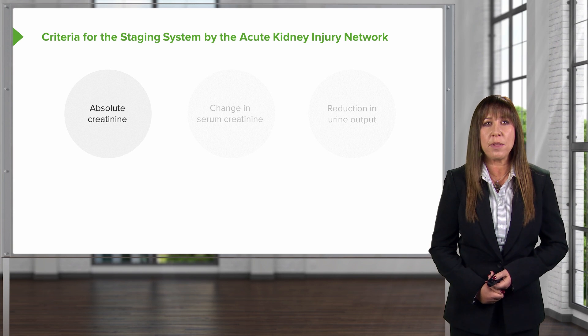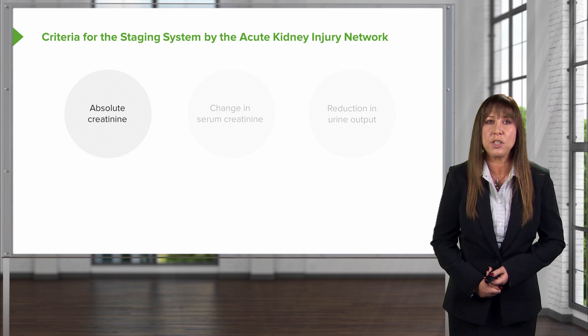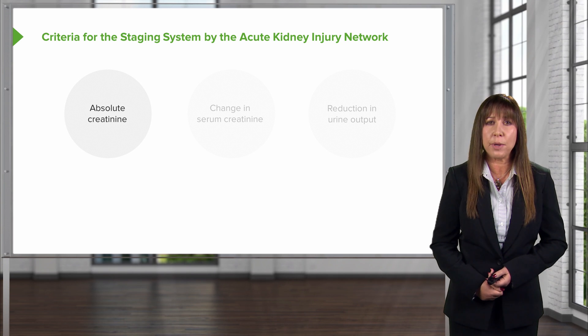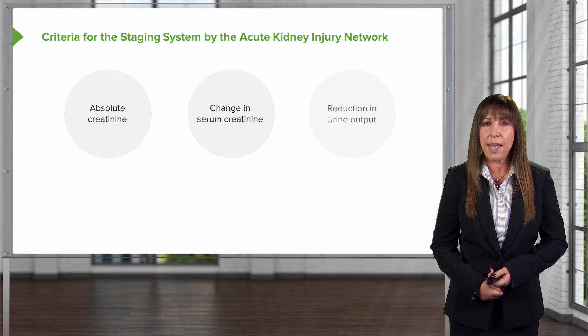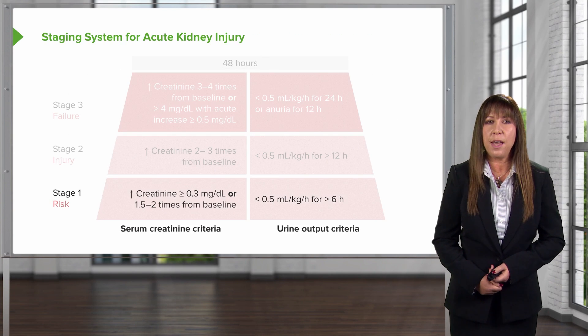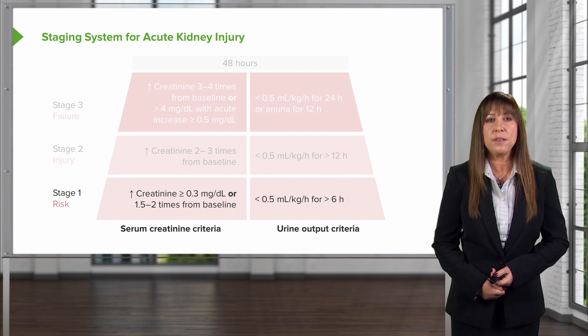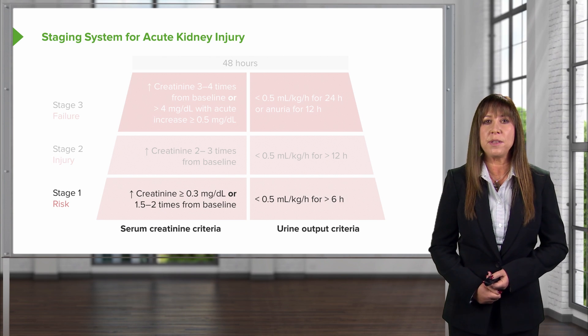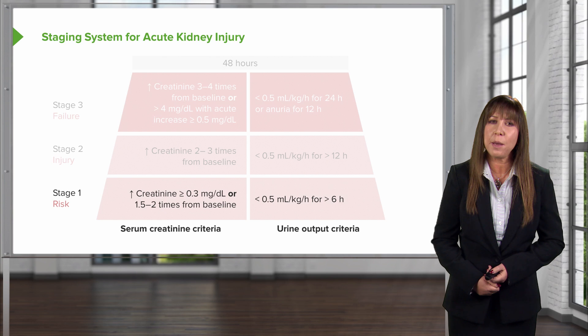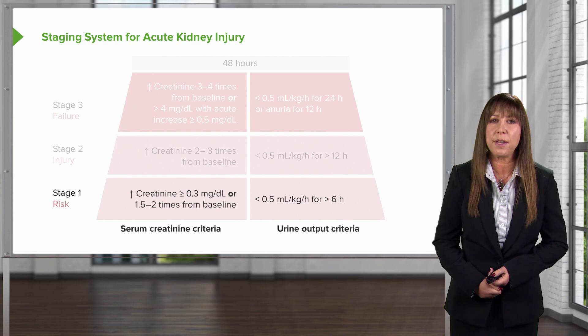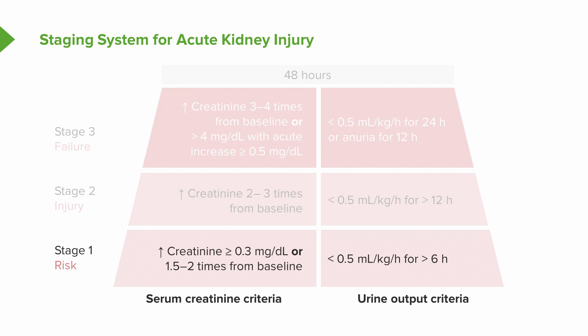In the early 2000s, the Acute Kidney Injury Network came up with staging criteria based on absolute creatinine, a change in serum creatinine, and reduction in urine output. Stage one includes a creatinine increase of greater than 0.3 mg/dL. That's significant — a patient whose creatinine goes from 0.7 to just 1.0 has developed AKI, and their mortality is increased. The urine output criterion for stage one is less than 0.5 mL per kg per hour over a six-hour period.